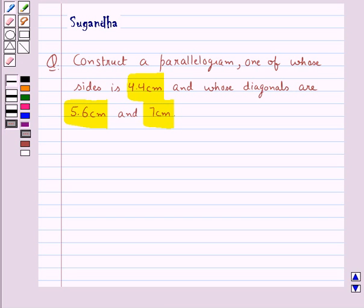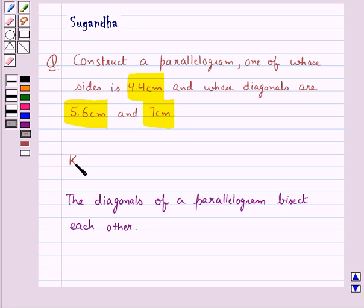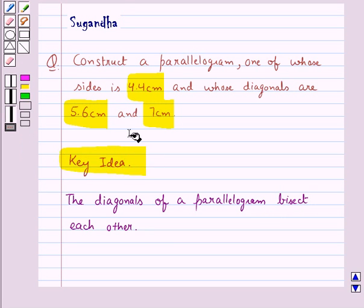Before moving on to the solution, let's recall the fact which says that the diagonals of a parallelogram bisect each other. This is the key idea to be used in this question.